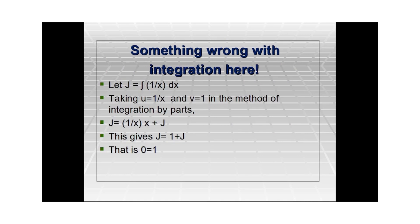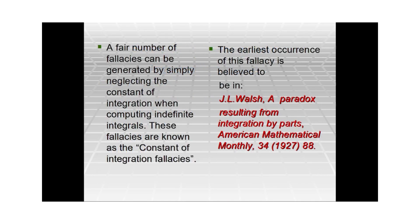Now something goes wrong with integration. Let J be the integral of 1/x. We integrate 1/x by parts, writing it as 1 × (1/x) and taking the first function to be 1/x and the second to be 1. Applying integration by parts, it turns out the integral equals 1 plus the integral itself, which leads to 0 = 1. Where did we go wrong? We neglected the constant of integration. This teaches us that writing the constant of integration in indefinite integrals is not something you can do away with. These fallacies are known as the constant of integration fallacies, and the earliest occurrence is believed to be in J.L. Walsh's 1927 publication in the American Mathematical Monthly.